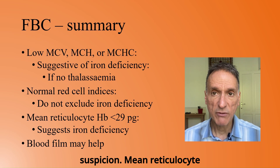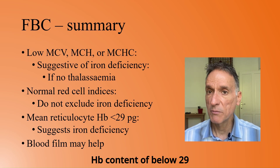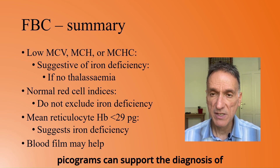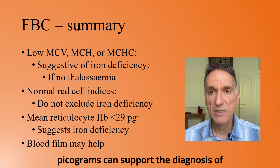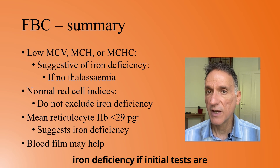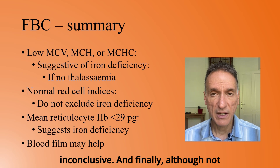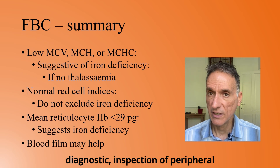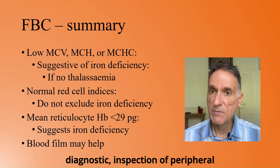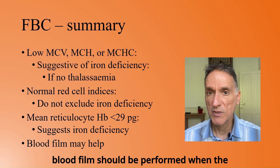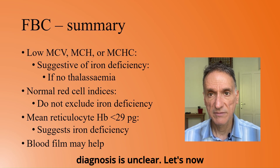Mean reticulocyte Hb content of below 29 pg can support the diagnosis of iron deficiency if initial tests are inconclusive. And finally, although not diagnostic, inspection of peripheral blood film should be performed when the diagnosis is unclear.